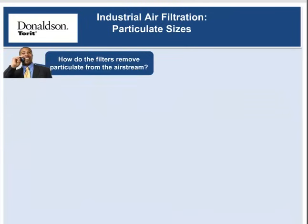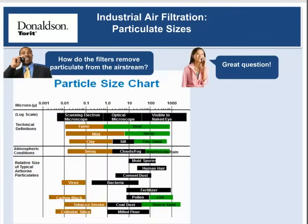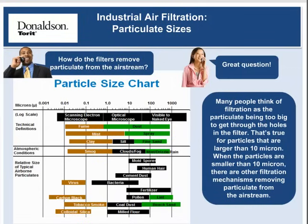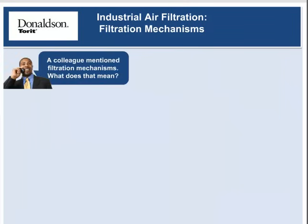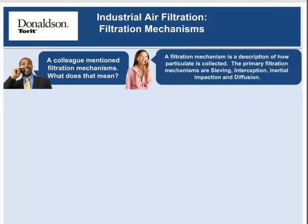How do filters remove particulate from the air stream? Many people think of filtration as the particulate being too big to get through the holes in the filter — that's true for particles larger than 10 microns. When particles are smaller than 10 microns, other filtration mechanisms are at work. A filtration mechanism describes how a particulate is collected. The primary filtration mechanisms are sieving, interception, inertial impaction, and diffusion.